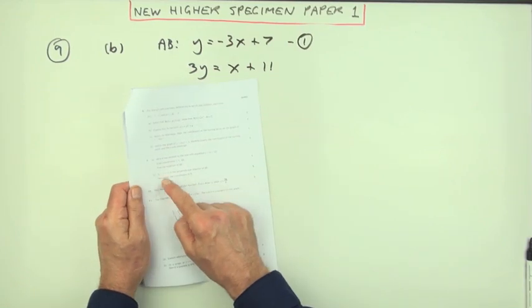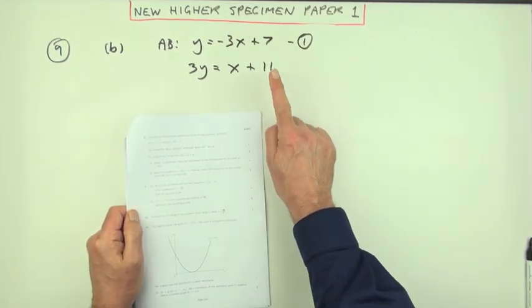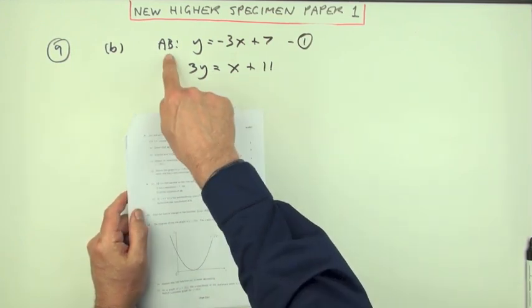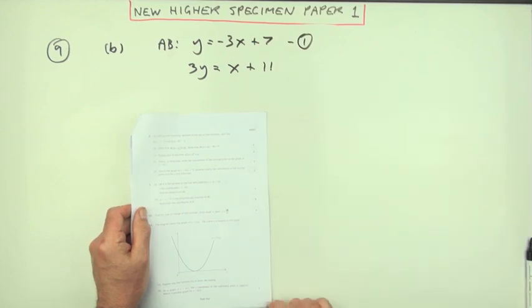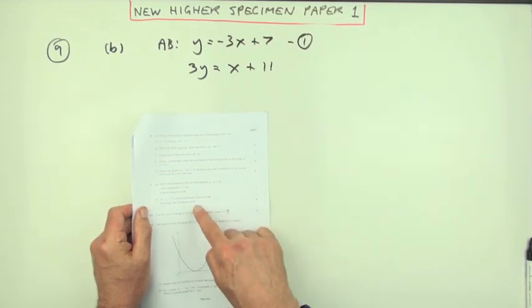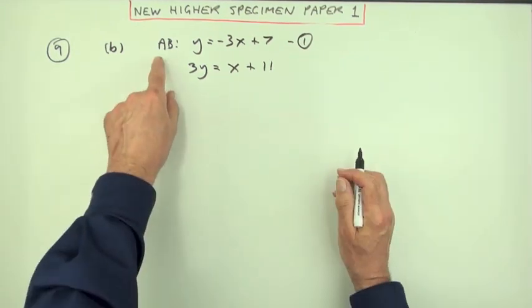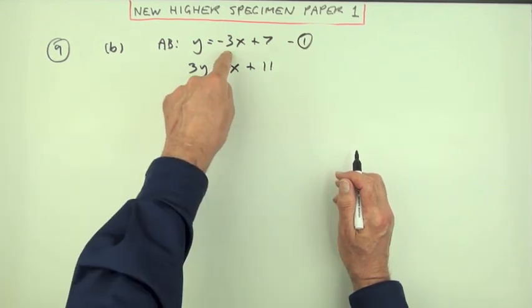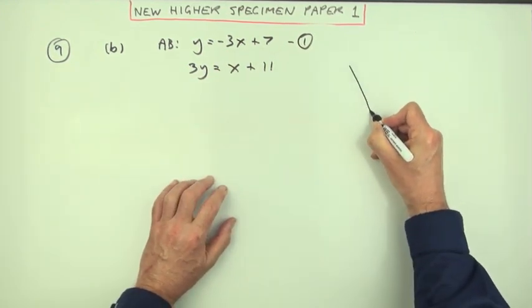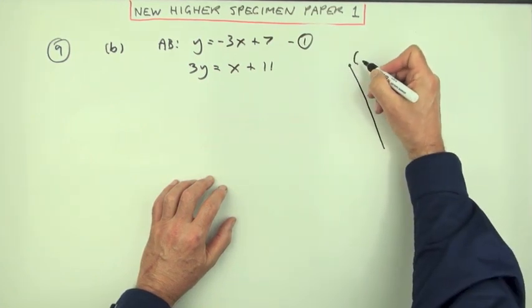Now what's part B? Here's another line, 3y equals x plus 11, is the perpendicular bisector of AB. You notice AB isn't an infinite line, it's got two terminal points on it. Determine the coordinates of B. You knew the coordinates of A. What would this line segment look like?